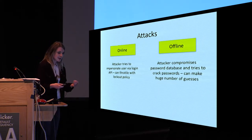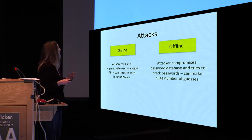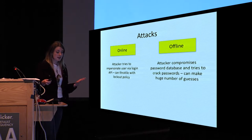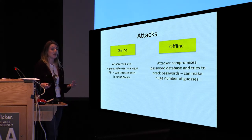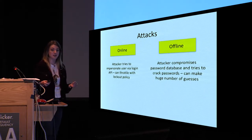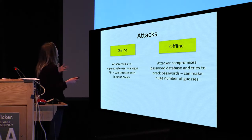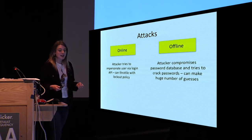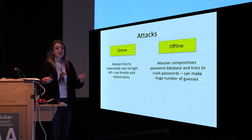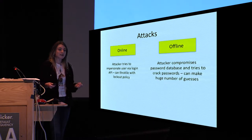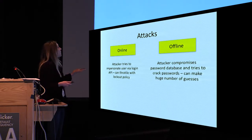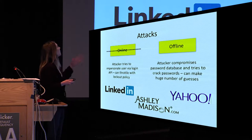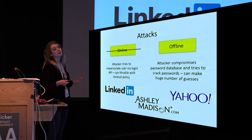When it comes to attacks against these schemes, there are two main vectors: online and offline attacks. In an online attack, an attacker attempts to impersonate the user via the login API. While this is a real threat, techniques such as locking the account after a certain number of incorrect submissions can keep the number of guesses very small. In contrast, in an offline attack the attacker has compromised the password hash database and tries to crack passwords by brute force, with the only real limit being the time they're willing to invest.